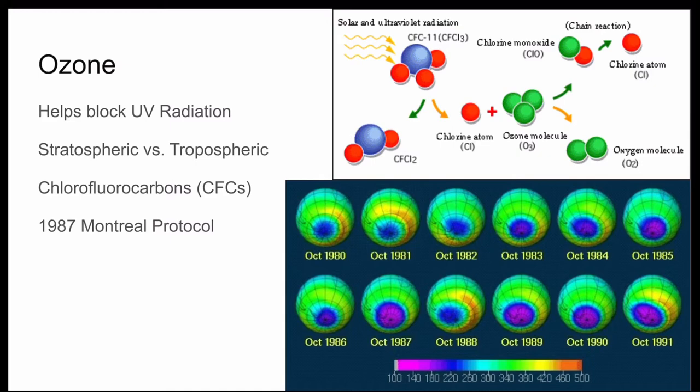In addition, ozone is largely responsible for the smog we see in urban areas where car traffic is very prevalent, like Los Angeles, for example. In the late 1970s, scientists discovered an alarming effect in the stratosphere above the polar regions: the ozone layer was getting thinner. We can see this in the diagram, where blue indicates a lack of ozone and purple indicates even worse depletion, showing it getting worse over time.